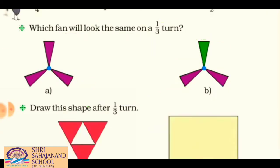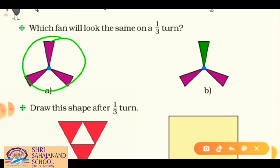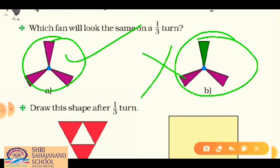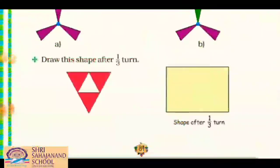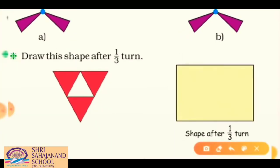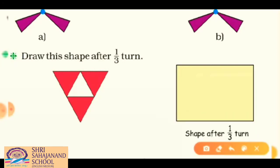The question is: which fan looks the same on one third turn? Picture A has blades of the same color, so it will look the same. Picture B has different colors, so it will not look the same. Next question: draw the shape after one third turn. We have a big red triangle with a small white triangle inside. Taking a right one third turn gives a rotated version of this shape.